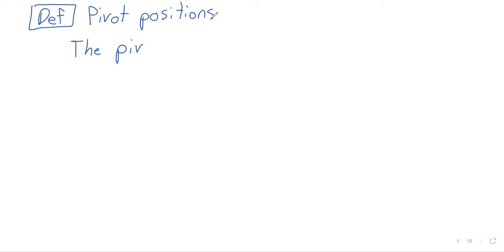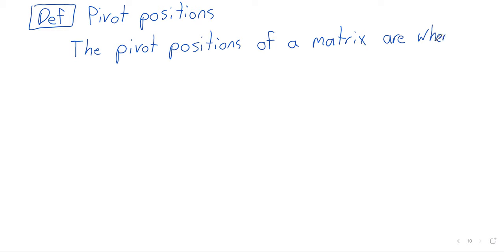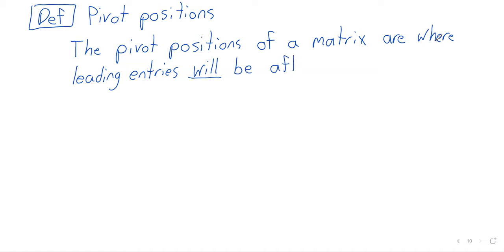The pivot positions of a matrix are where the leading entries will be after Gaussian elimination. So not the leading entries of the original matrix, but where the leading entries will be.